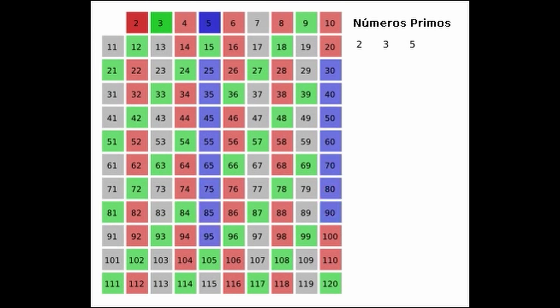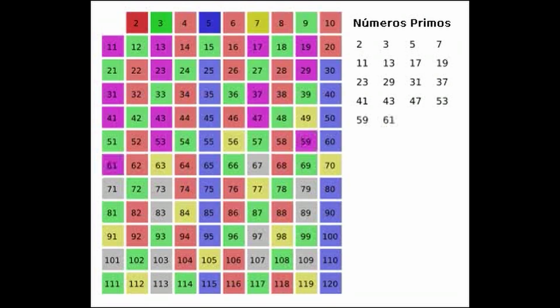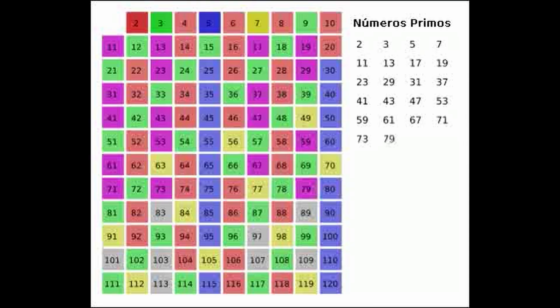Lie groups and Lie algebras. Lie algebras are closely related to Lie groups, which are smooth manifolds with a group structure. The tangent space at the identity element of a Lie group forms a Lie algebra, providing a powerful tool to study the local structure of Lie groups.